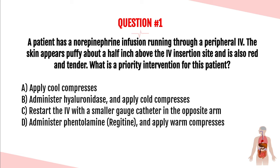The answer is D, administer phentolamine or Regitine and apply warm compresses. The antidote for a vasopressor extravasation is phentolamine, and it should be given as soon as possible after the extravasation is identified. If you do give phentolamine, you do want to apply warm compresses after.